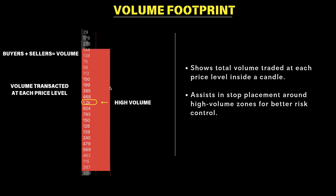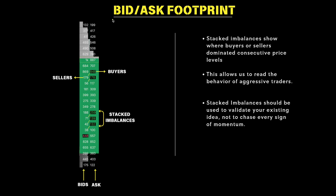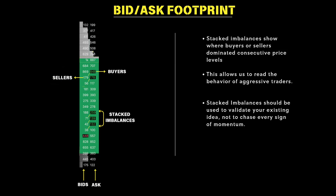Volume footprint is very straightforward. Into the bid ask footprint — this is the one that I like to use the most, about 80 to 90% of the time. On a bid ask spread, we have a left column and a right column. The left column is going to be known as our bids — these are all of our aggressive sell orders at each price level. The right column is going to be known as our ask, otherwise known as the offer. This is going to be our aggressive buy orders in the market.